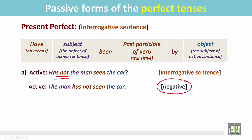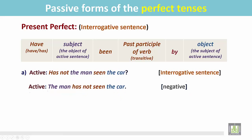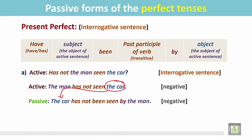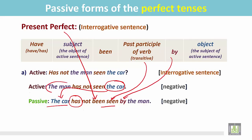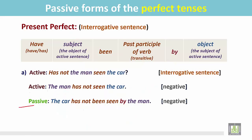It is in the negative form. In this active sentence, 'the man has not seen what?' — the answer is 'the car'. It is the object of the verb 'seen'. In the passive sentence, the object of the active sentence becomes the subject: 'the car' — 'has not been seen by the man.'